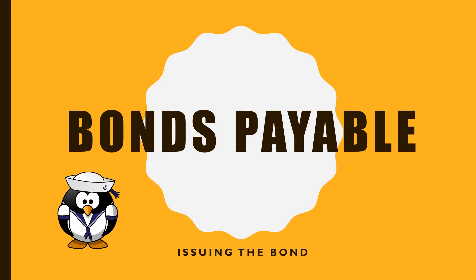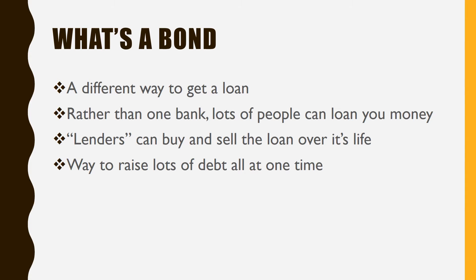Bonds payable tends to be the hardest subject for students to understand, but it's really pretty straightforward if you understand your time value of money concepts. First of all, what's a bond? It's just a different way to get a loan. If you think about when a company wants to get a whole lot of different owners, it issues stock and breaks the ownership into little shares so different people can buy and sell. That's the same idea with a bond.